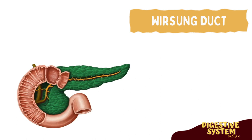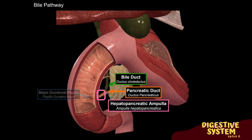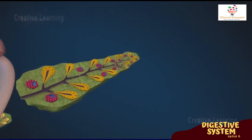The Wirsung duct is the main pancreatic duct, joining the pancreas to the common bile duct to supply pancreatic juice into the duodenum. The Santorini duct is the accessory duct of the pancreas, with one branch joining the pancreatic duct and the other opening into the duodenum at the lesser duodenal papilla. The hepatopancreatic ampulla, or ampulla of Vater, is the expanded chamber formed by the union of the bile duct and the main pancreatic duct.